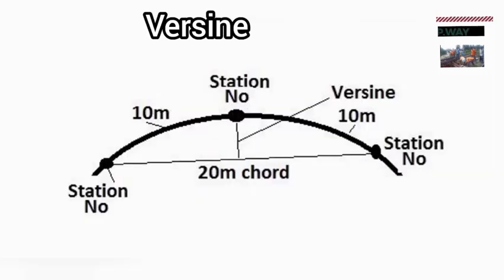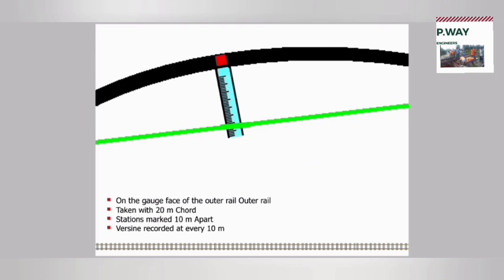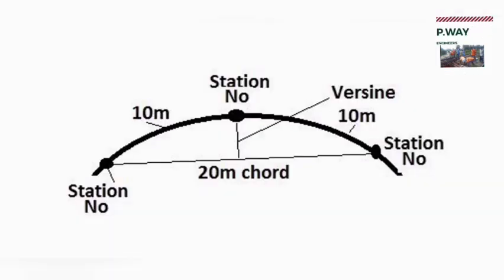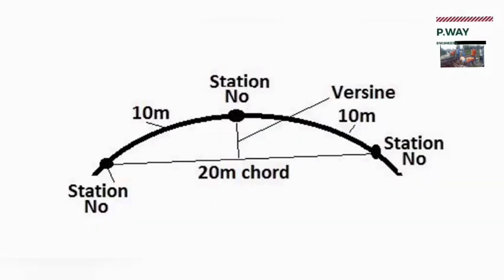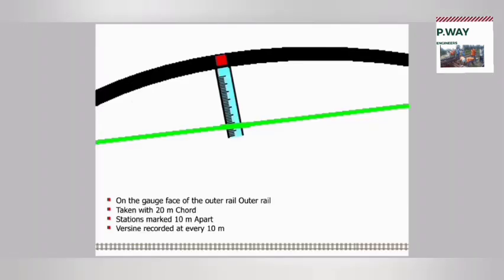We should know about versine and how to measure it in a curved track. In a curved track, every 10 meters is marked as a station. A 20-meter chord is used for measurement of versine, placed on the first and third stations. The versine is measured at the center, which is the second station. The straight-line distance between the chord and the curved arc is known as the versine. For all stations, versine, super elevation, and gauge are to be measured.